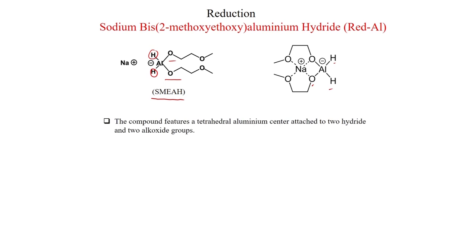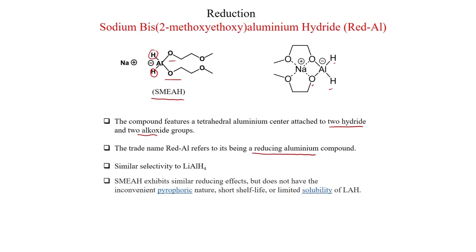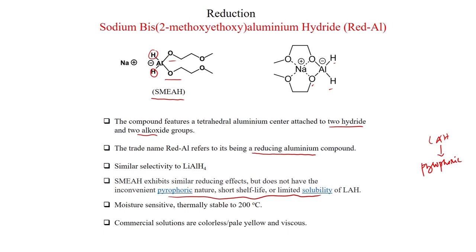The compound features a tetrahedral aluminum center attached to 2 hydrides and 2 alkoxide groups. The trade name Red-Al refers to being a reducing aluminum compound — 'red' means reducing, 'L' means aluminum — with similar reactivity to lithium aluminum hydride. However, SMEAH does not have the inconvenient pyrophoric nature of LiAlH4, which catches fire in air. SMEAH is quite stable, is moisture sensitive, and is thermally stable to 200°C. Commercial solutions are colorless, pale yellow, and viscous.